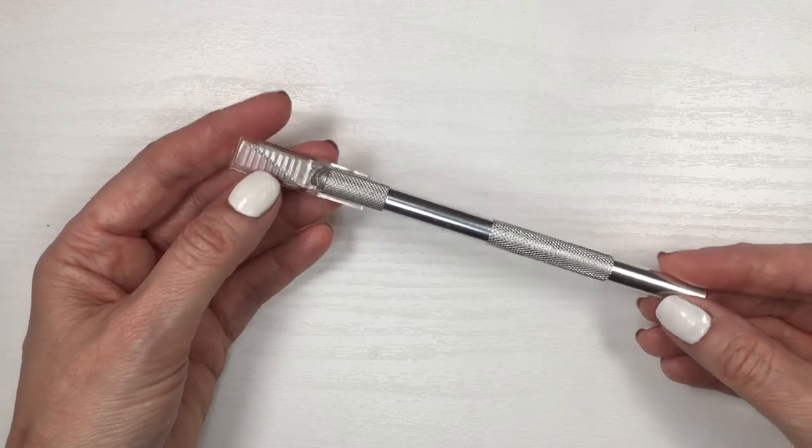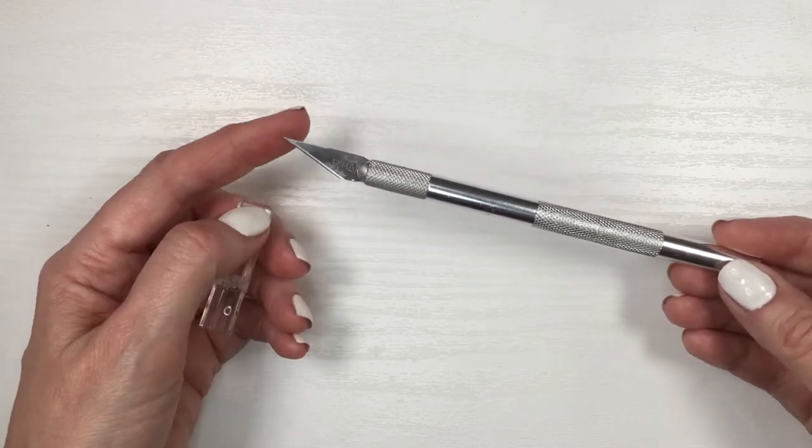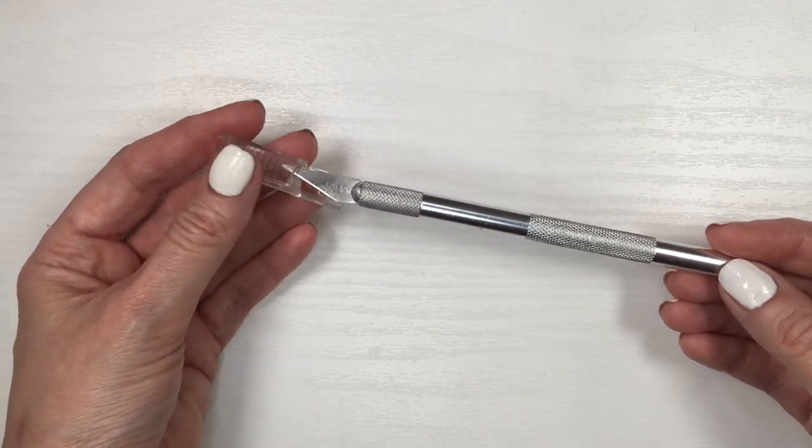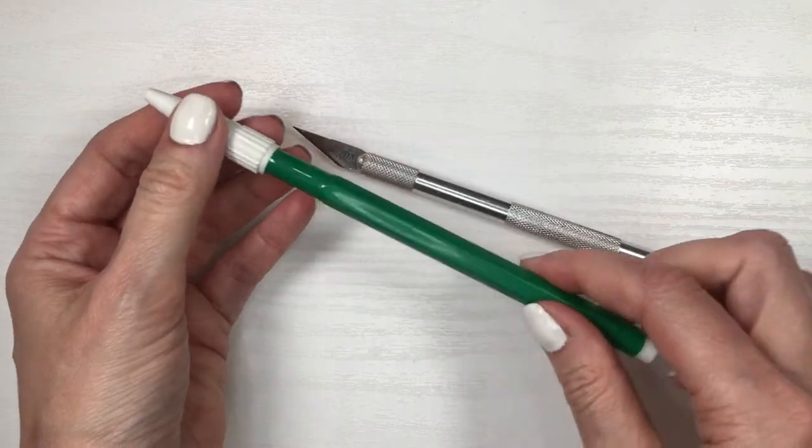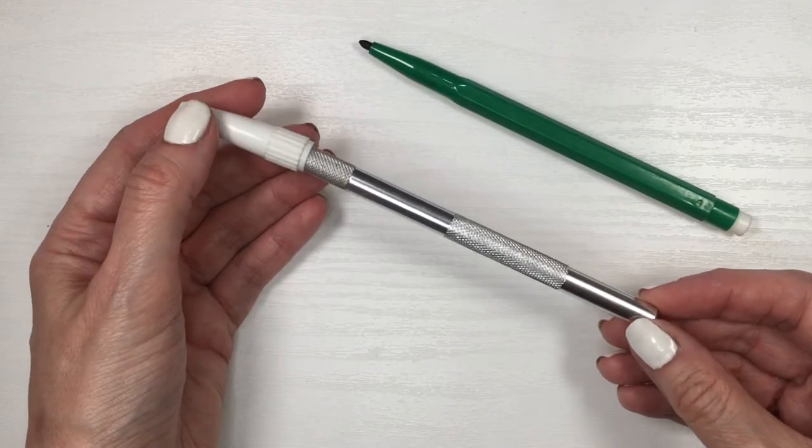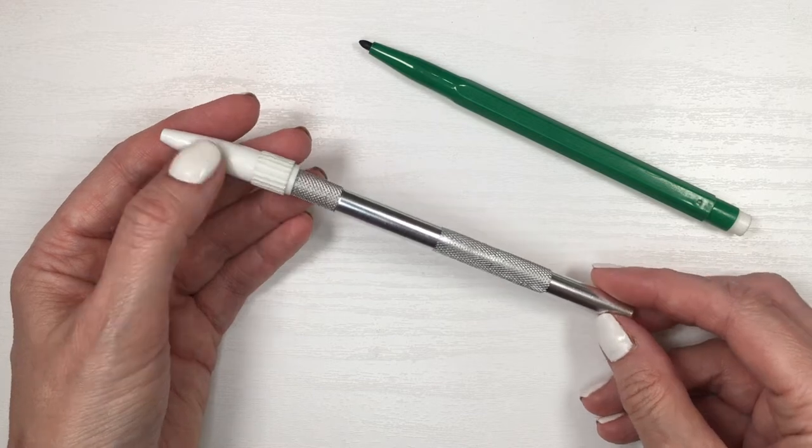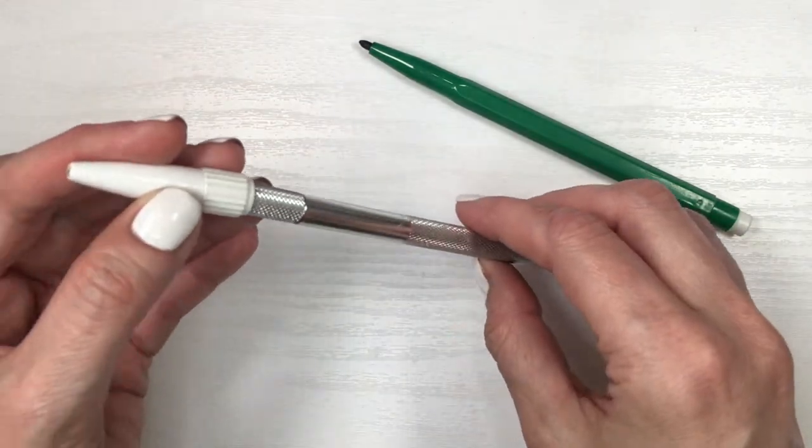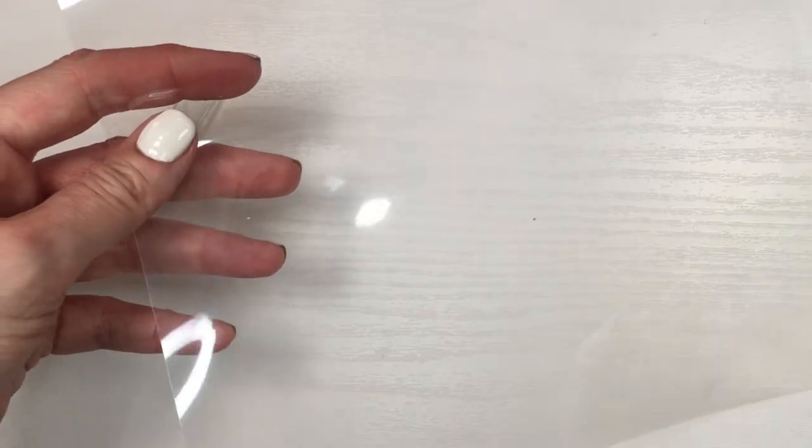I want it sealed, especially because of how sharp and dangerous this can be when open like this. A lot of people use caps of dried markers and that's a good solution if it works for you. However, I store my Exacto knife standing up and I want to be able to just see what it is, so I'm using clear material.